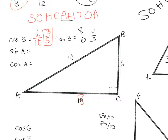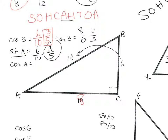Sine of A is opposite over hypotenuse. Opposite of A is 6 and the hypotenuse is 10, so it's 6 tenths, which reduces to 3 fifths. And cosine of A is adjacent over hypotenuse: adjacent to A is 8 and hypotenuse is 10, so it's 8 tenths, which reduces to 4 fifths. Always make sure to reduce.